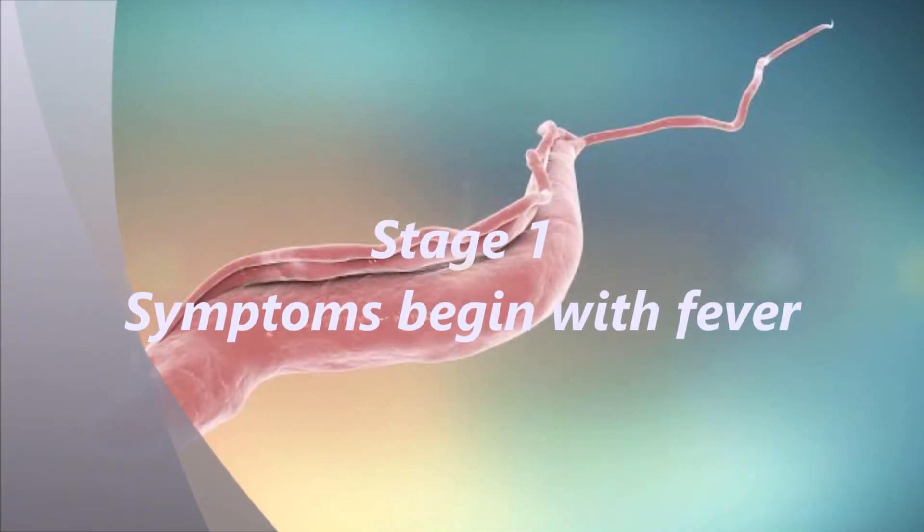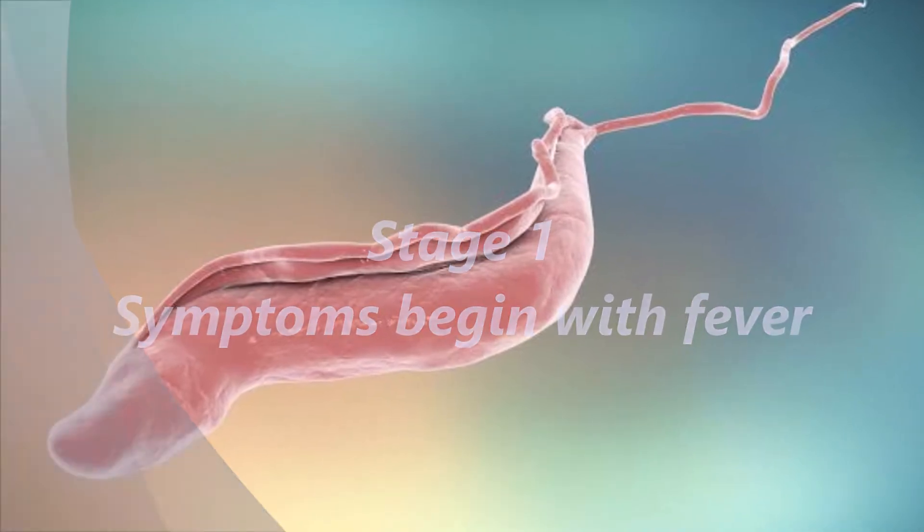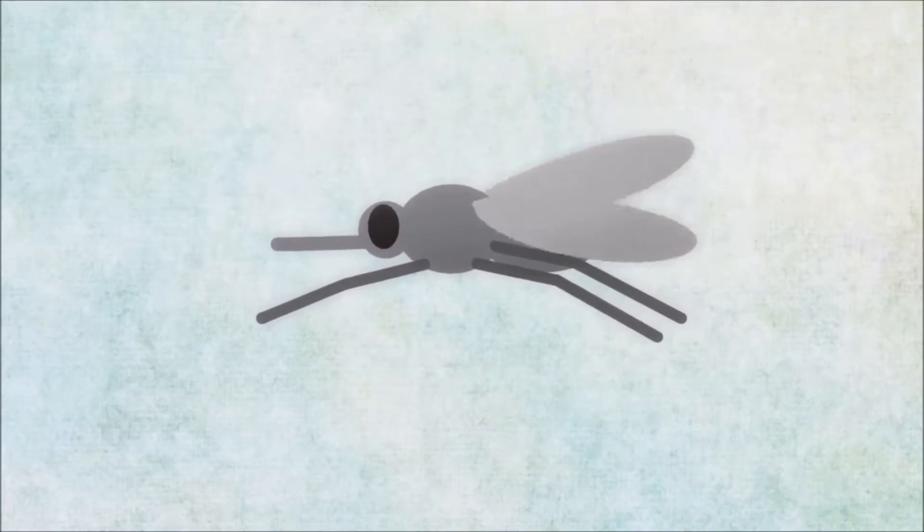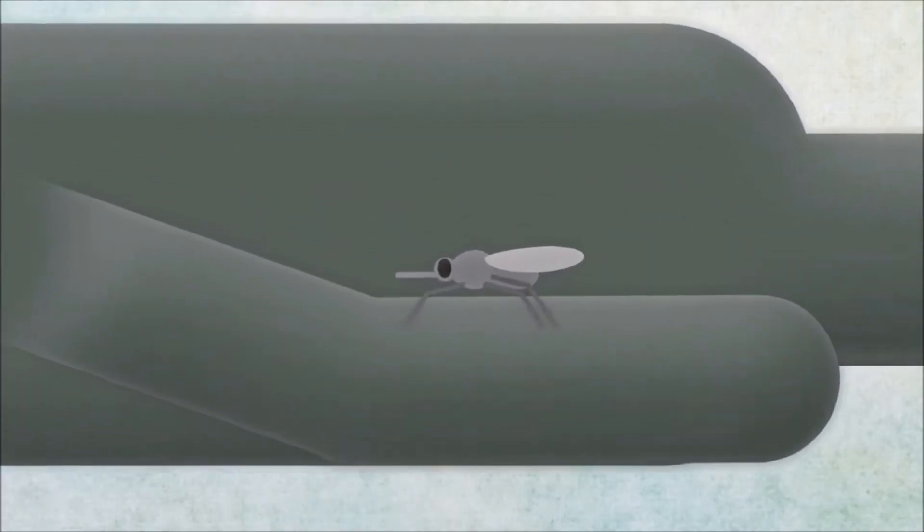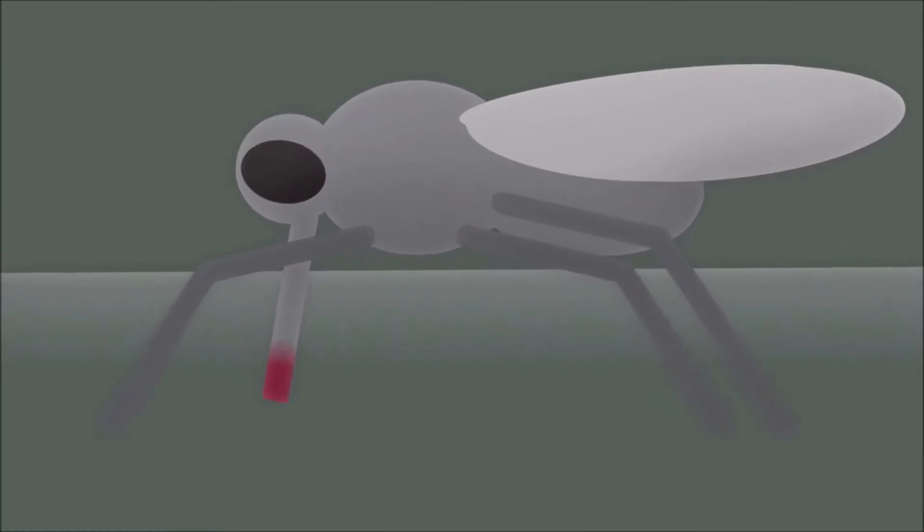In stage one, symptoms begin with fever. The sleeping sickness cycle starts with a bite from a tsetse fly. If the fly bites someone who's already sick, it ingests parasites as well as blood.